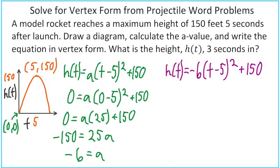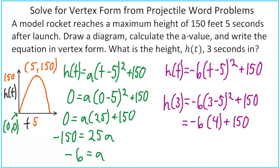The last question is asking what the height is going to be 3 seconds in. In other words, what's h of 3? So let's substitute in 3 and start working on this. So 3 minus 5 is negative 2. Negative 2 times negative 2 gives us 4. Then I can go ahead and multiply negative 6 times 4. Get my negative 24 plus 150, which is 126. But remember, this is a word problem.